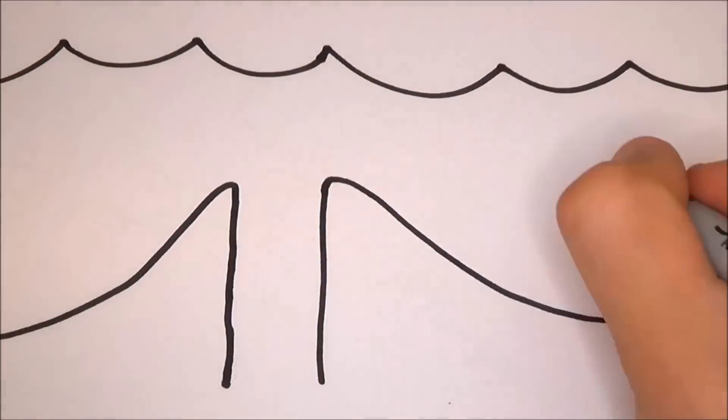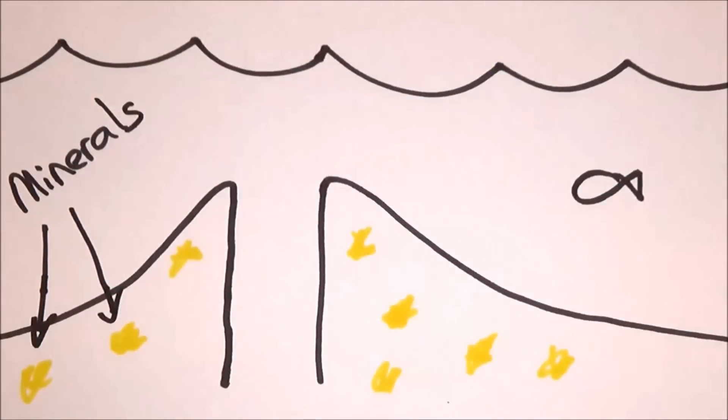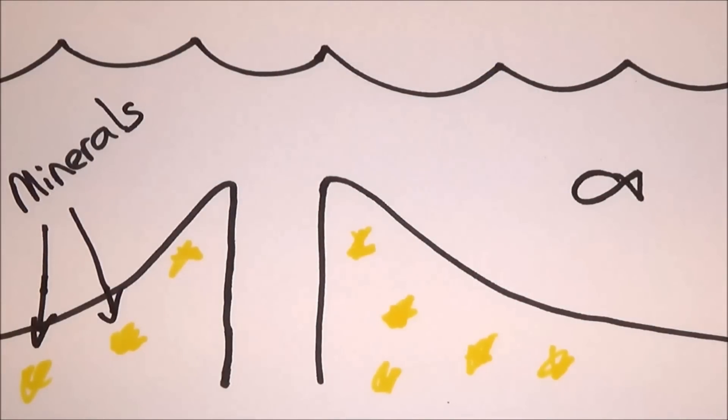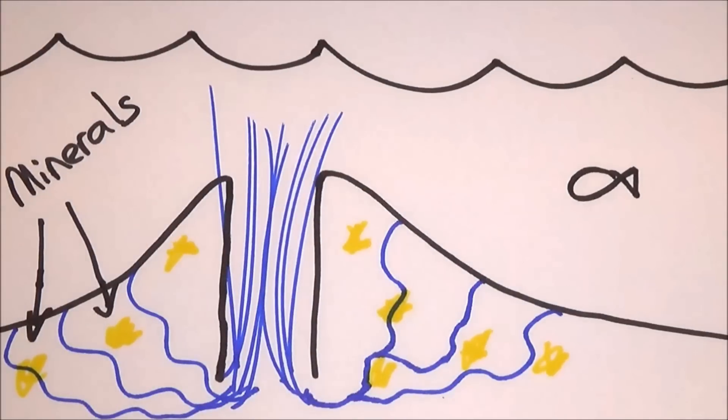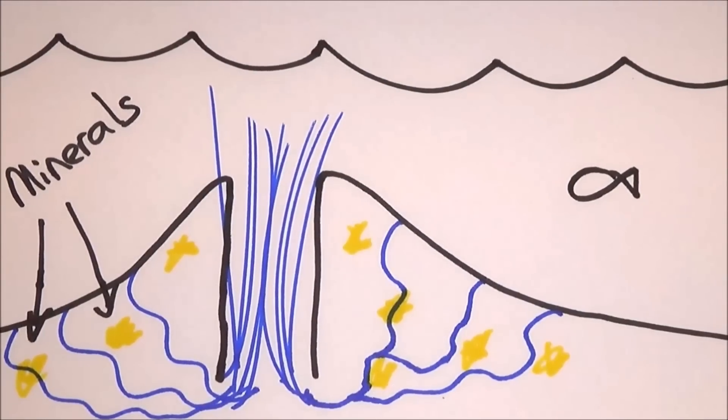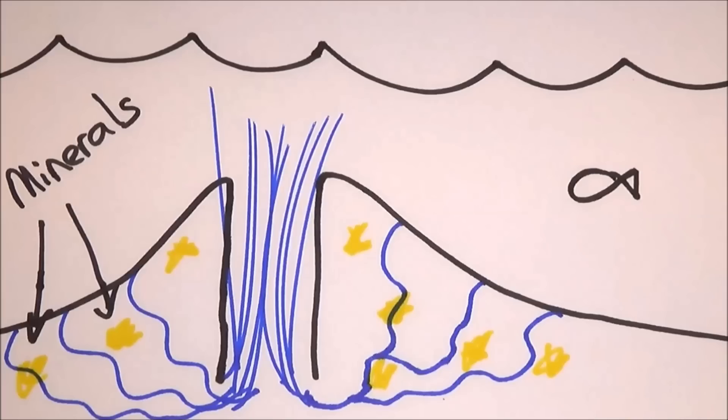But there is another reason why we have salty seas. Features known as hydrothermal vents on the seafloor are where water seeped into the oceanic crust and is being heated up. Then it explodes out onto the surface in a superheated form. But as the water heats up, it can hold more minerals. As it comes back superheated, it brings a boatload of minerals with it, including a lot of salt.